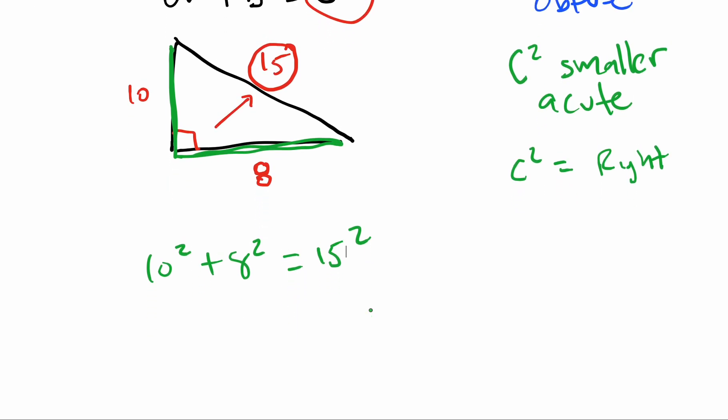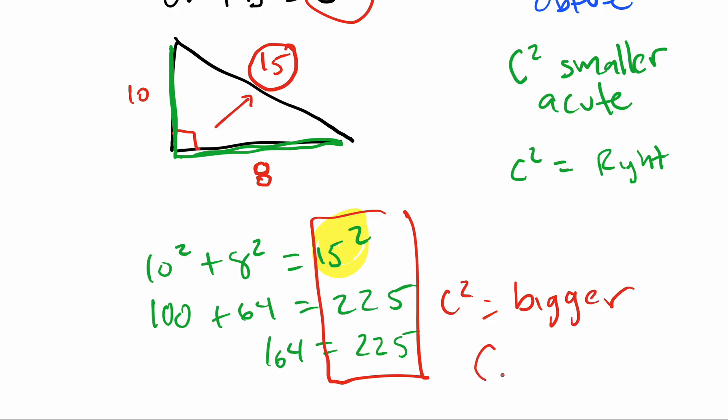And we can test this to see is the c squared bigger or smaller or is it the same? So we're going to calculate this. 100 plus 64 equals 225. 164 equals 225. When analyzing this, the c squared is bigger than the other side. It's a larger number. That is going to mean that we have an obtuse triangle. It's not a right triangle.